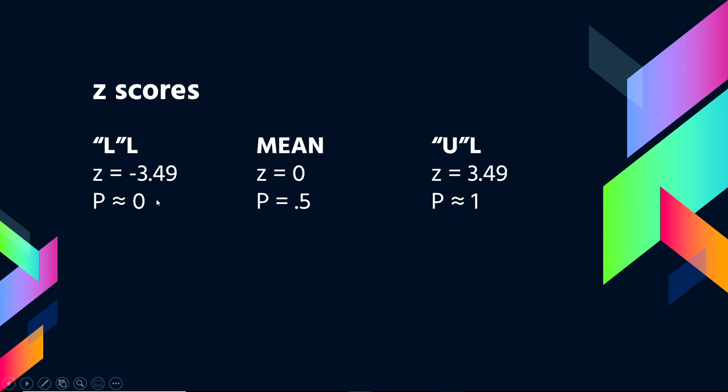Now, you get z-scores smaller and bigger than these limits that happens. It just means they're very unlikely to occur. So it can happen. It does. Those values are produced for extreme cases.